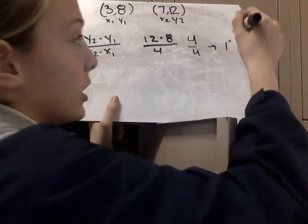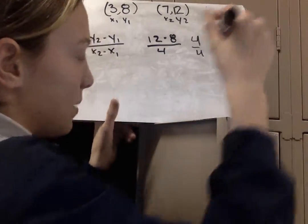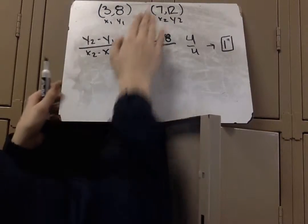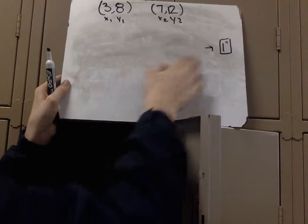So, now that we know our slope is 1, we're going to move on to finding our y-intercept. I'm just going to quickly erase this so we have more room.